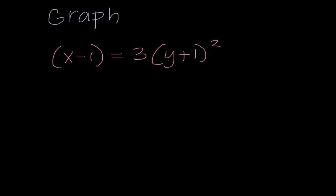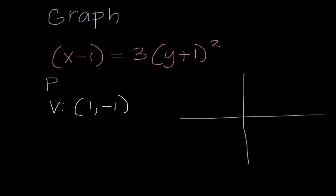Now let's go through some graphing problems. These will already be in the right form on your test. This one is a parabola because only one variable is squared. The vertex is (1, negative 1). Since this is an x equals graph, my options are right or left, and the positive a value means it opens to the right.